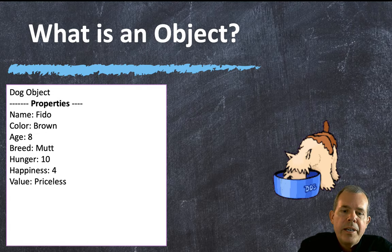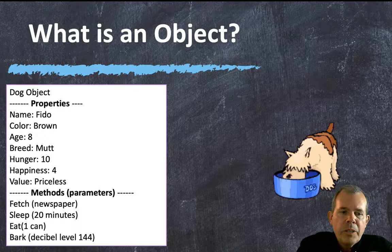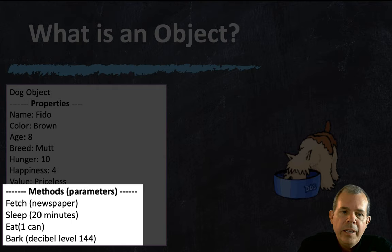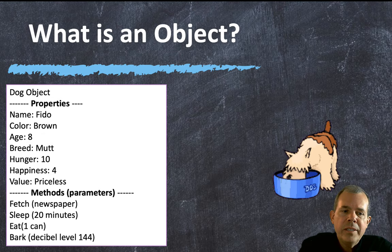That's what properties are in an object. The other half of what an object is, is what the object can do — and that's called a method. Methods are frequently the actions. A lot of times when you do an action with an object, you have a thing that you work on. For instance, you tell Fido to fetch — so what's he supposed to fetch? He's going to get the newspaper. Another action might be sleep for 20 minutes as a command in your video game, or eat, or bark at a certain decibel level. Those are all things we'd call actions or methods.